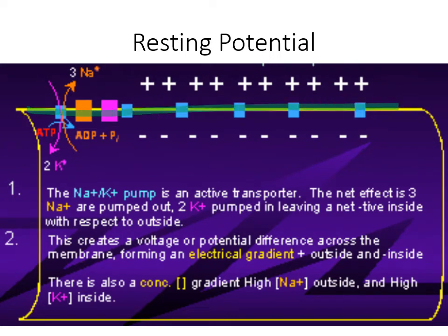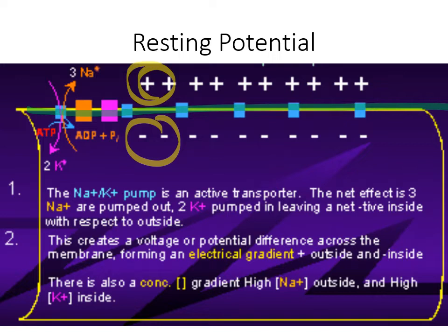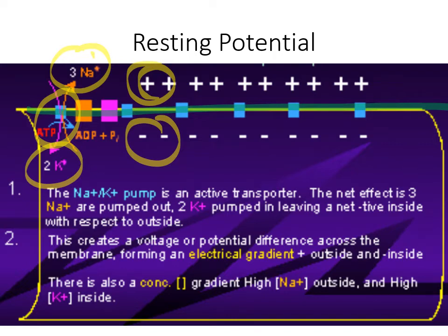Let's go over that in more detail. Imagine this is the membrane — inside where the words are, that's inside the cell. On the outside, we have these positive sodium ions. Inside we have potassium ions as well as some other negatively charged things. So we end up with this negative 70 millivolt potential between the inside and the outside. The sodium-potassium pumps are working away, using ATP to keep the concentration of sodium high on the outside and potassium high on the inside. This is the resting potential.